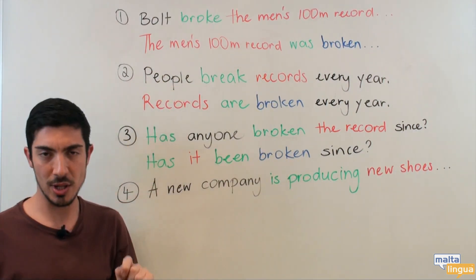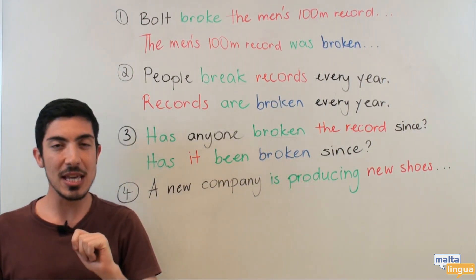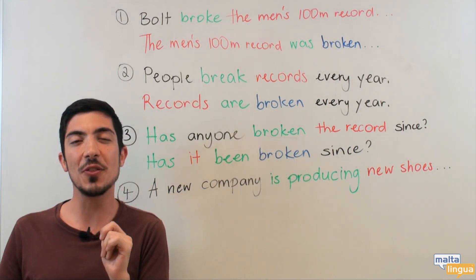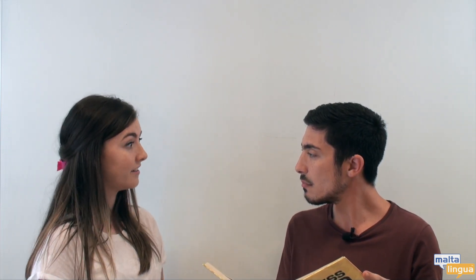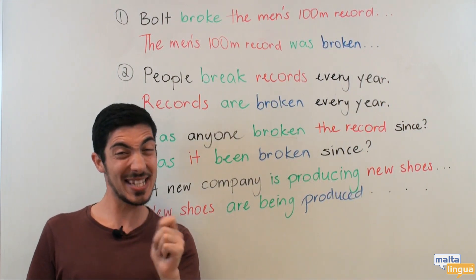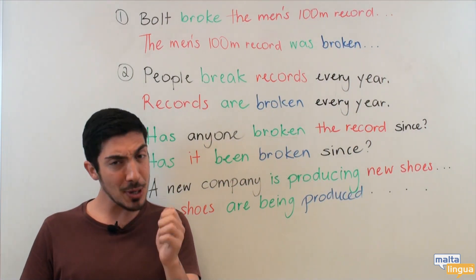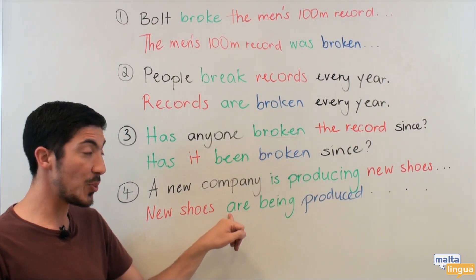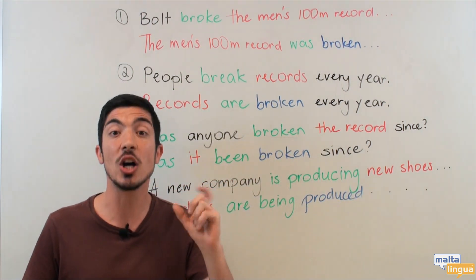Katie used the present continuous form in the active in the dialogue: 'Did you hear about this new company that's producing these shoes to break the record again?' Can you think of what the passive form of this might be? We would say: 'New shoes are being produced.' The present continuous form can be a little bit tricky. Do be careful — here we use 'are' because we're talking about the shoes, not the company. Make sure to change the verb accordingly.